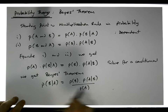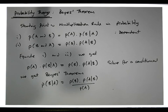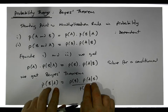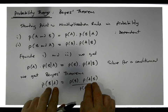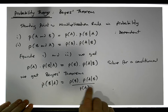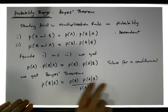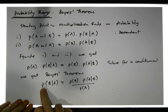This is Bayes' theorem. What it allows us to do is swap the conditionals effectively. So if I'm given information about the probability of A knowing that B has happened, and I also know the probability of B and the probability of A, I can always figure out what the probability of B given A is.